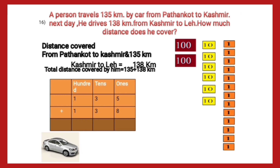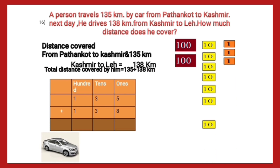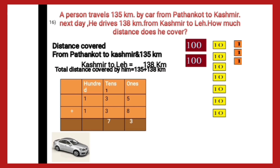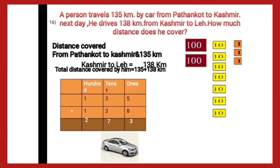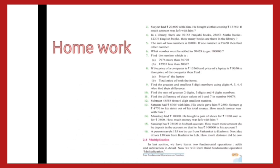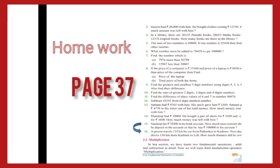Adding them up, we have 13 ones. We convert 10 cards of ones into one tens, so there is one more card at tens and 3 at the ones place. Now we have 7 cards of tens and 2 cards of hundreds. So the answer is 273 kilometers — the total distance covered by the person. Children, it's time for homework. Please revise question number 15 and 16. Thank you.